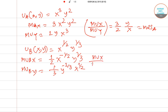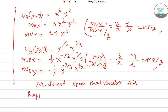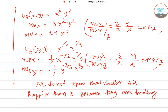Computing MU_x / MU_y for consumer A gives 3/2 · y/x, and doing the same for consumer B also gives 3/2 · y/x. So only looking at the slope of the indifference curves, or by the marginal rate of substitution, we can see these two are absolutely equal. Therefore we cannot say or infer that consumer A is happier than consumer B, because they are trading the goods at the same rate.